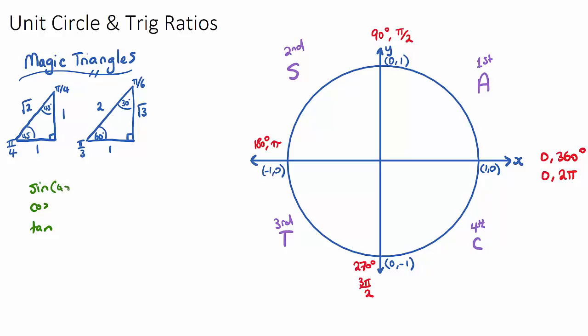So sine of 45 would just be opposite 1 over the hypotenuse √2. We can verify this on our calculator, but we need to be able to solve sine of 45 without a calculator in IB exams.